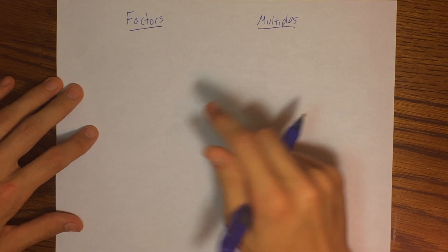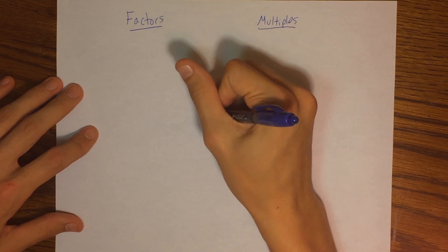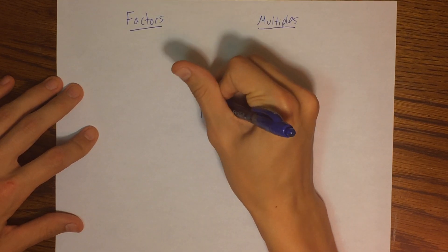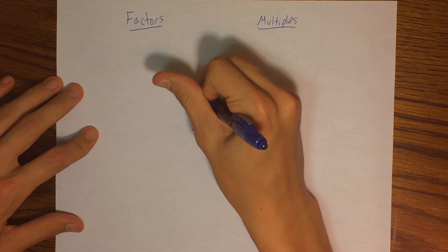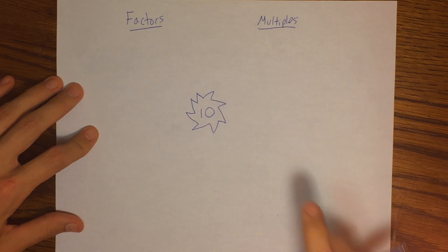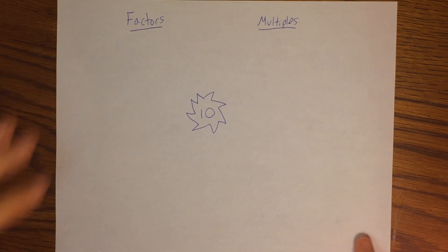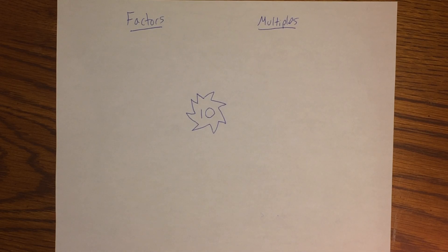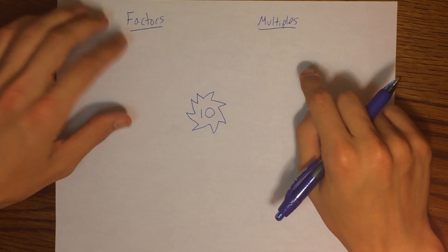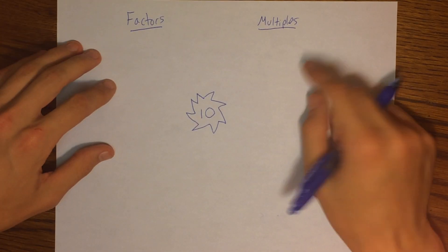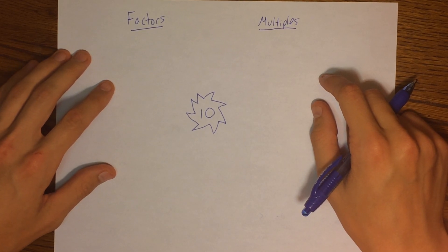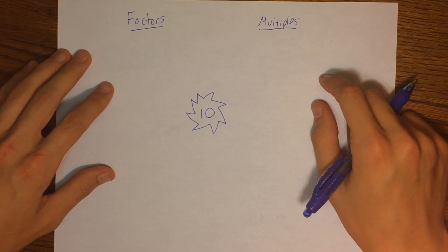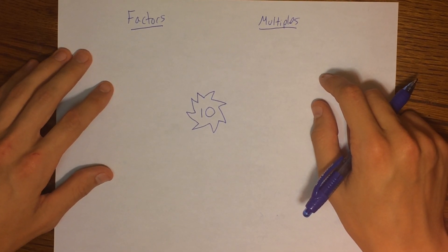We're going to use my good friend 10. 10 is going to be the magic number that we're working with here. In this video, I'm just going to give you a couple of tips on how to remember which one is which — which one is a factor, which one is a multiple. So without further ado, let's get going.